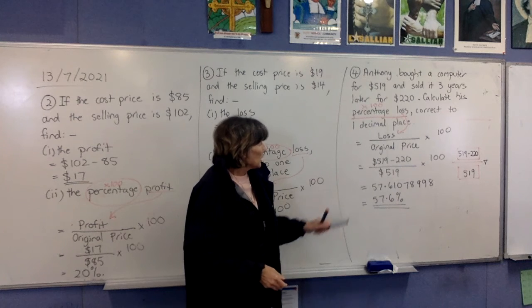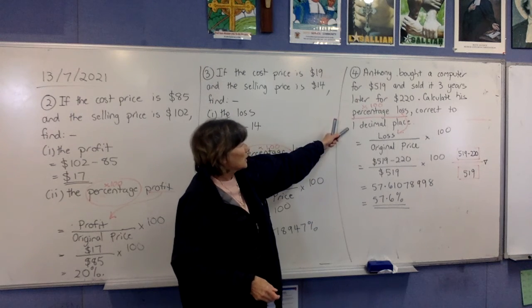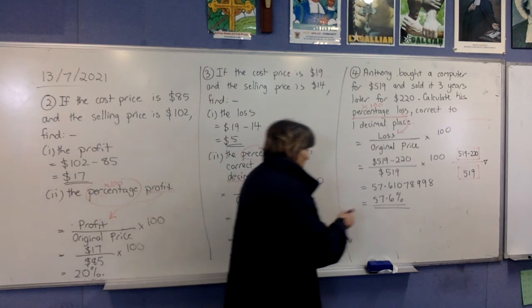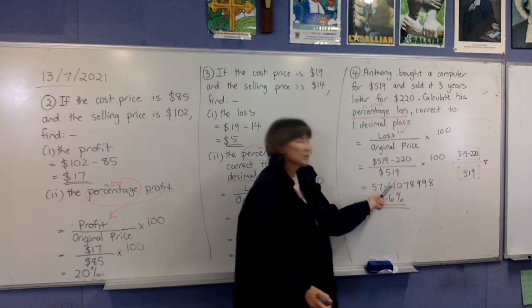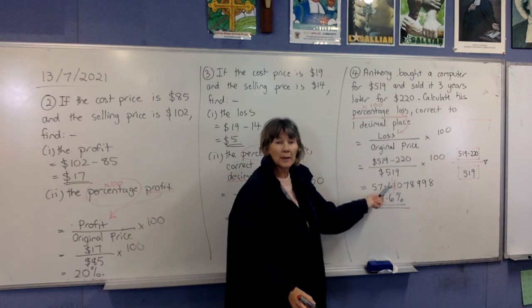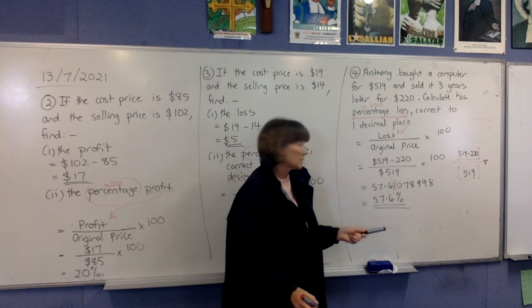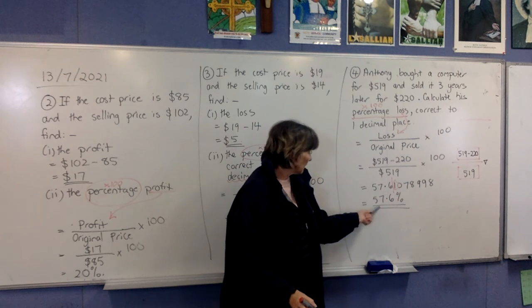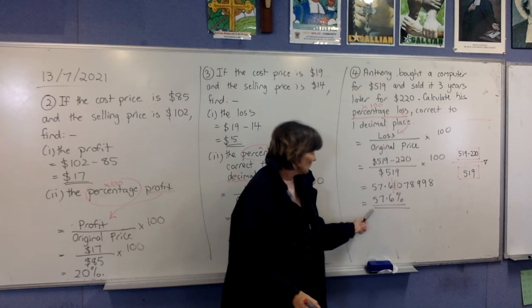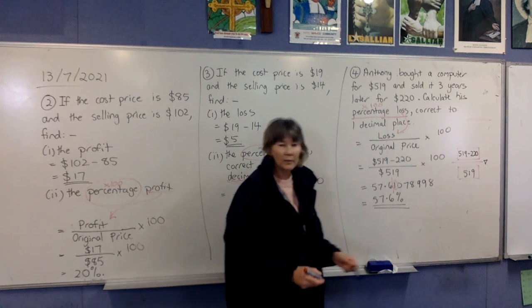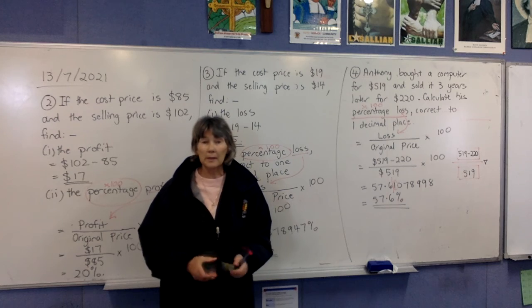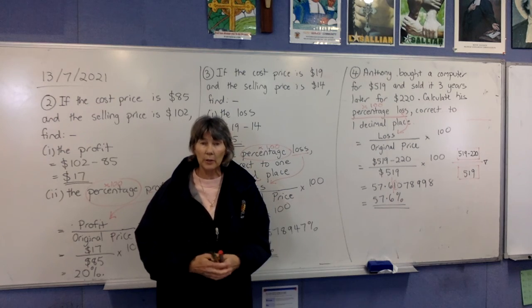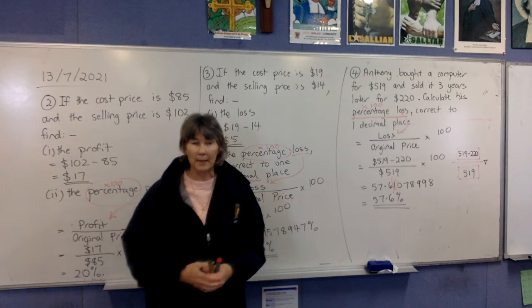Once you get your decimal, it says correct to one decimal place. That digit is less than five, so we keep the first decimal place as a six: 57.6%. We'll come back in the next video and do some more examples.